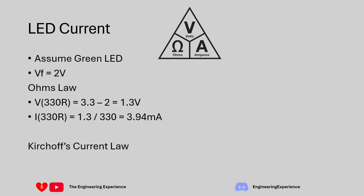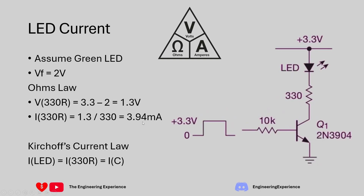Looking at Kirchhoff's current law, which tells us that current in a loop is the same, the current through the resistor is the same as the current through the LED. So our LED current equals the current through the 330 ohm resistor, which is 3.94 milliamps - let's call that approximately 4 milliamps.